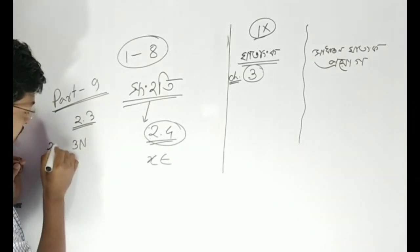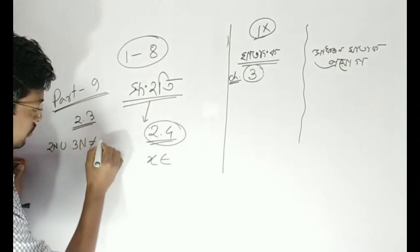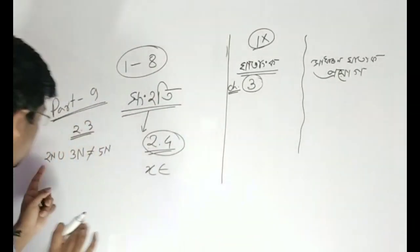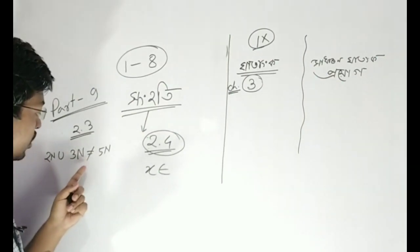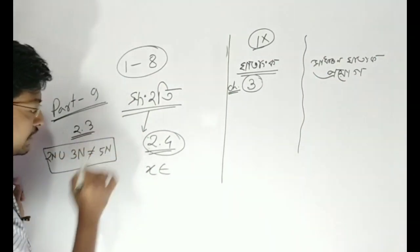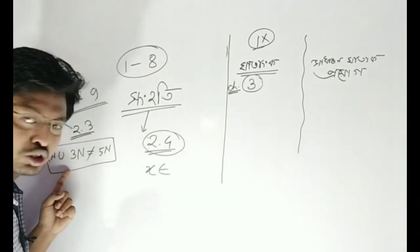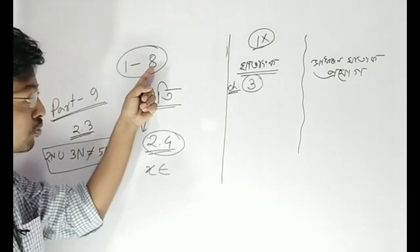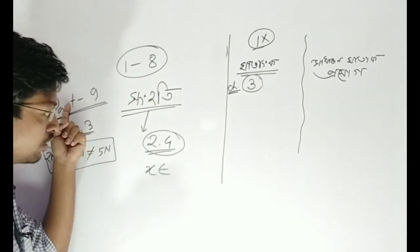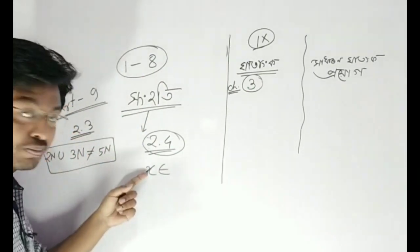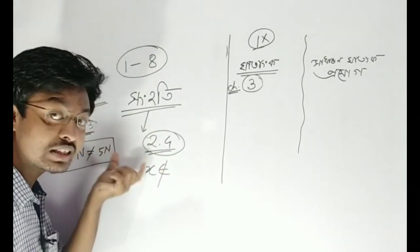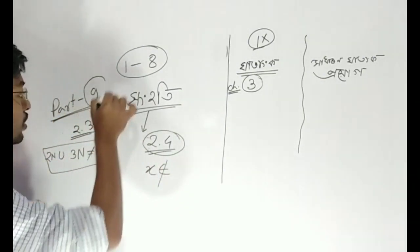3N, 2N, union, 5N — this is the question. 2N union 3N is not equal to 5N. This is the question. I will read this question, I will read this part 9. And the question is: x belongs, not belongs. So I will read this part 9.